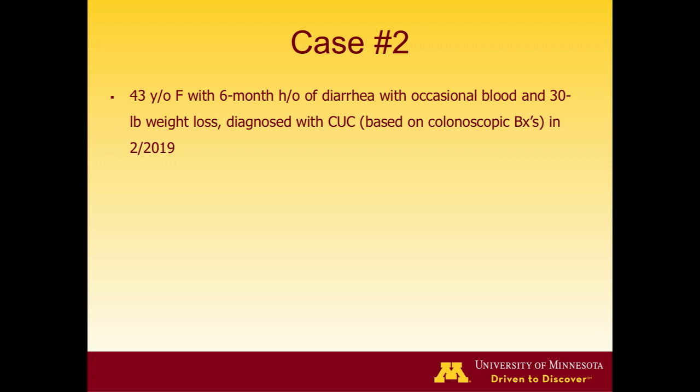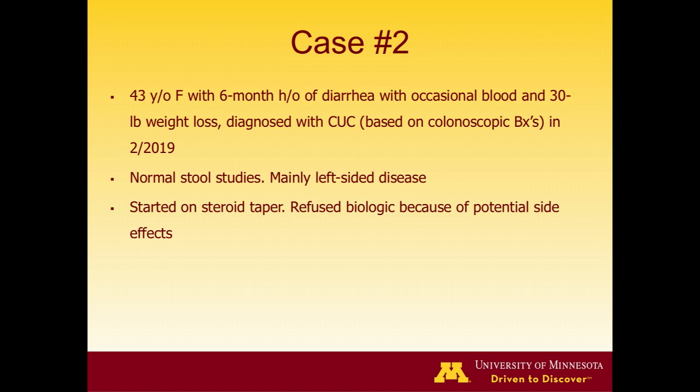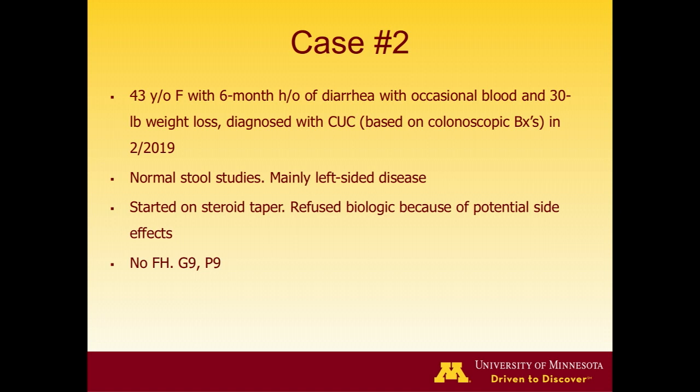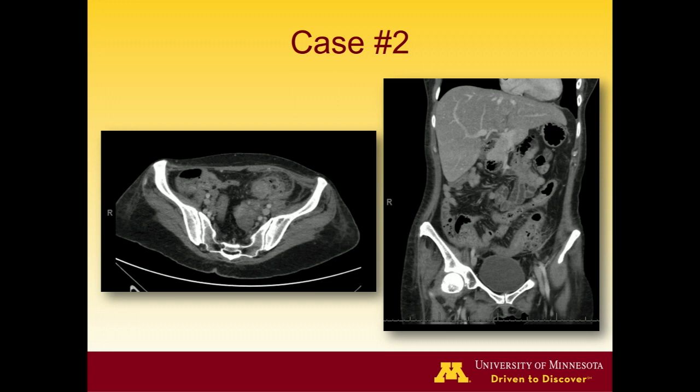Case 2: A 43-year-old woman from North Dakota with a six-month history of diarrhea with occasional blood and 30-pound weight loss, diagnosed with ulcerative colitis based on endoscopic biopsies in February 2019. She had normal stool studies, mainly left-sided disease. Biologics were discussed but she declined due to side effect concerns. She was placed on a steroid taper with some improvement. No family history of IBD; nine vaginal deliveries.